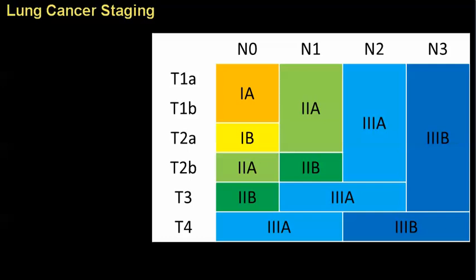So the T's start with the T1s. Prior to the reformatting of the staging system to the 7th edition, it used to be just T1s and anything less than or equal to 3 centimeters and totally encased in lung. Encased in lung meaning it didn't involve the pleura, didn't involve the bronchus. It was completely a parenchymal lesion.